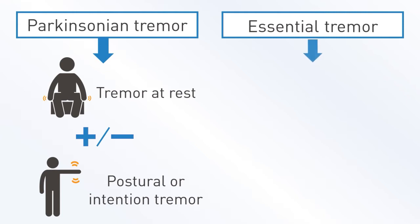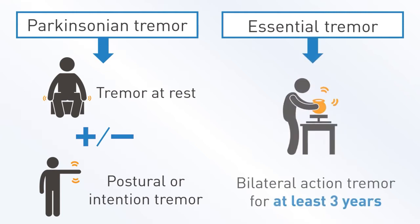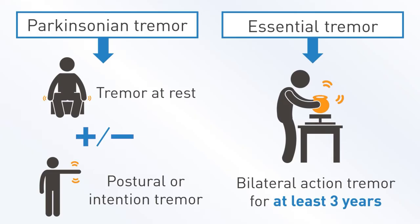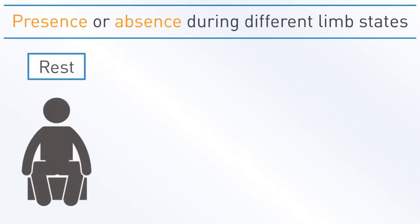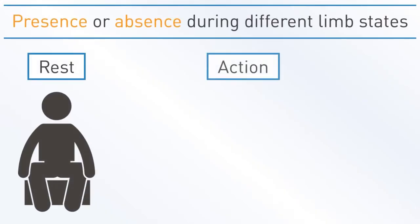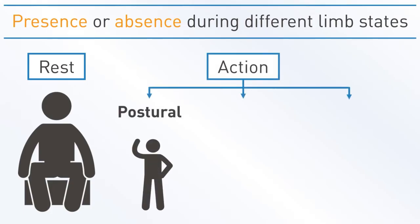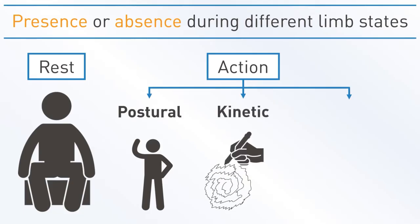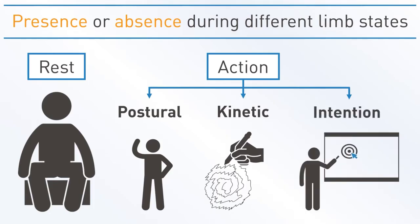Essential tremor is defined as a predominantly action tremor present in both arms for at least three years. Tremors are classified by presence or absence during different limb states, such as when the limb is at rest or performing some kind of action. Action tremor is further divided into postural tremor, kinetic tremor, and intention tremor — which worsens as the target is approached.